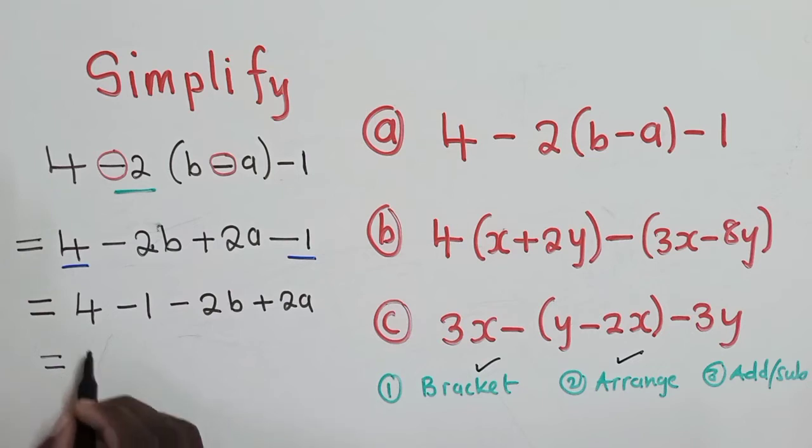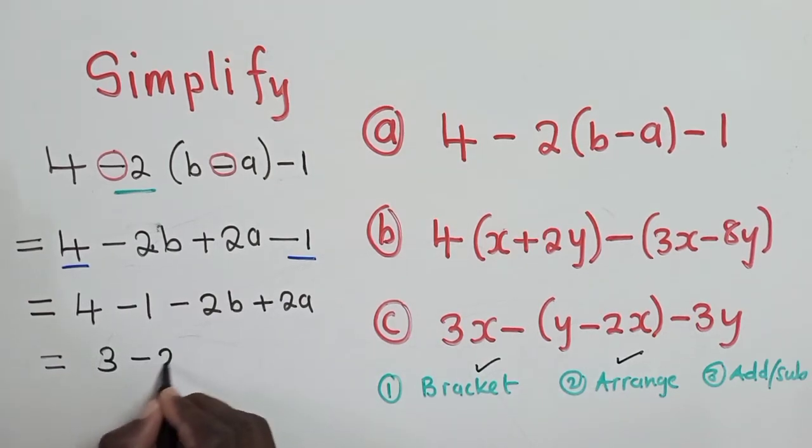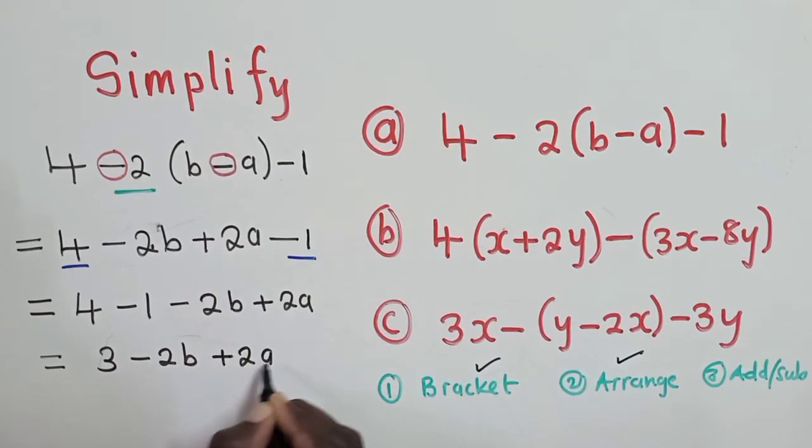So we get equal to 4 minus 1, it's 3 minus 2b plus 2a. And this is our solution.